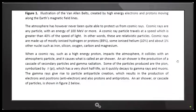She states that the atmosphere has, however, never been quite able to protect us from cosmic rays. And cosmic rays are any particle with an energy of 100 MeVs, megavolts or more. A cosmic ray particle travels at a speed which is greater than 40% of the speed of light. In other words, these are relativistic particles.